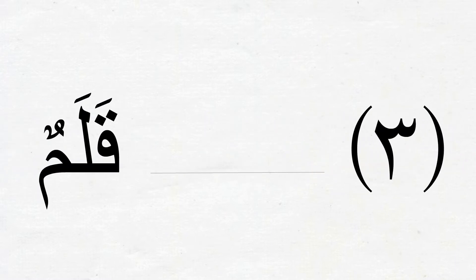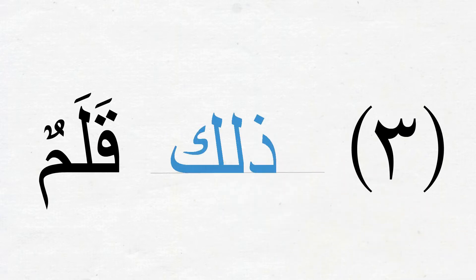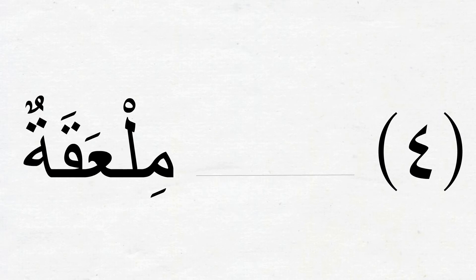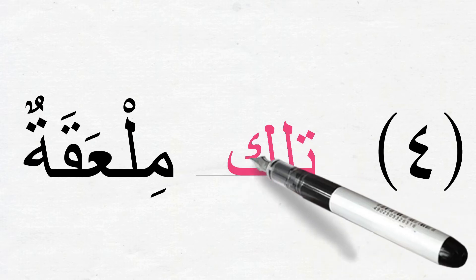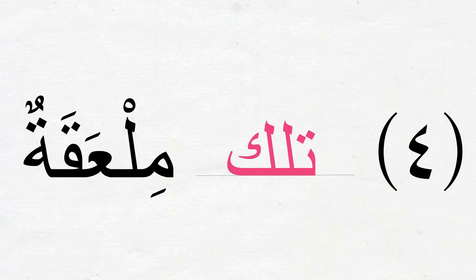Now we have قَلَمٌ which is مُذَكَّر, so we should say ذَٰلِكَ قَلَمٌ — that is a pen. Next: مِلْعَقَةٌ means 'a spoon', which is a مُؤَنَّث اسم, so we write تِلْكَ for مبتدأ — تِلْكَ مِلْعَقَةٌ, that is a spoon.